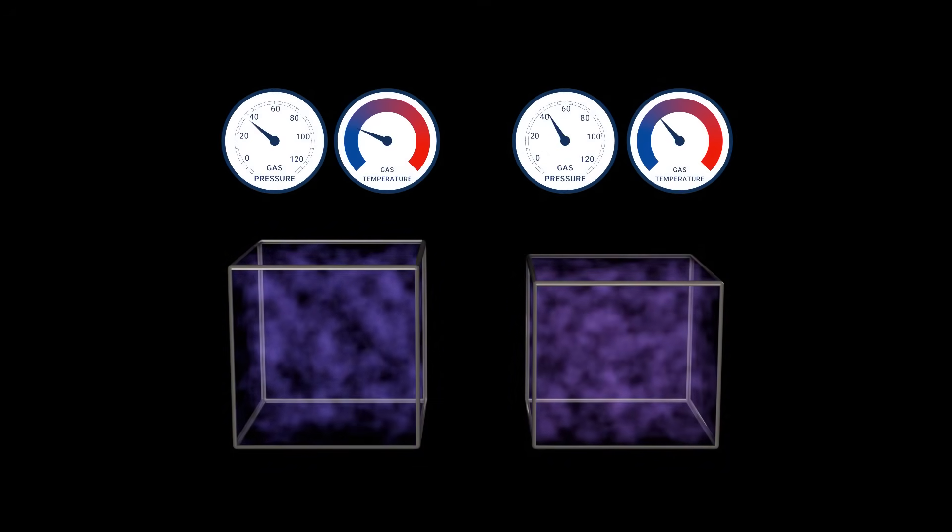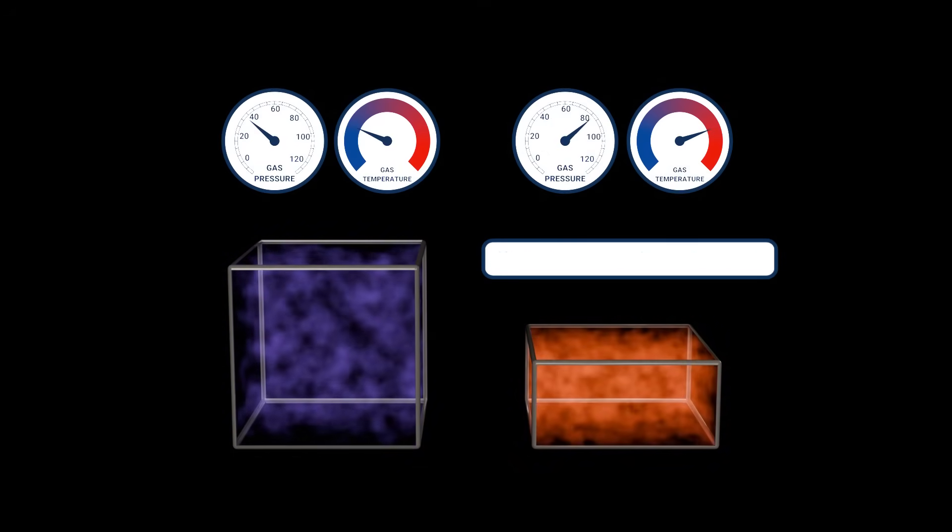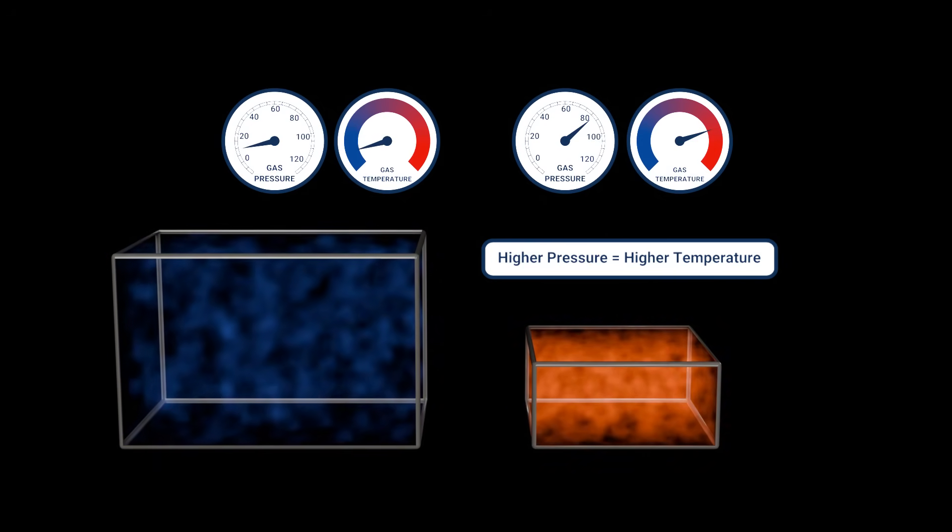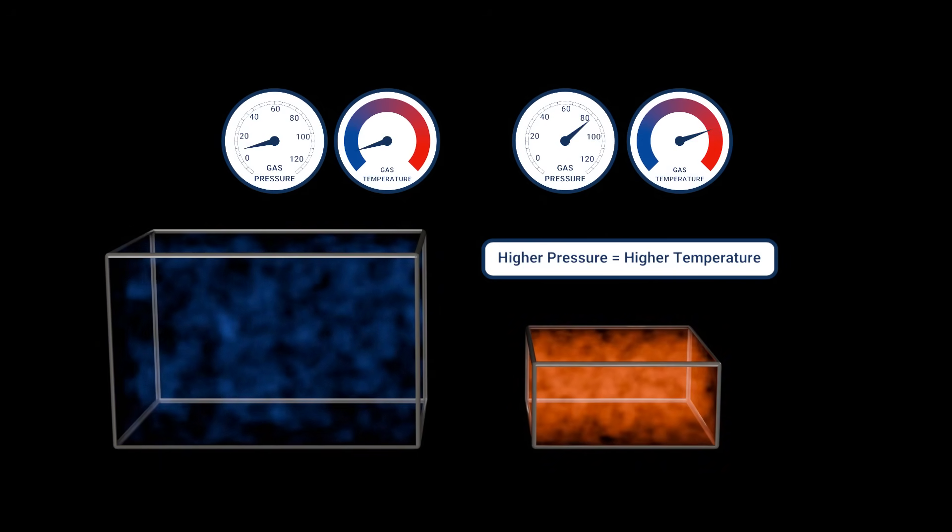We're able to control the temperature at which refrigerant boils and condenses by changing the pressure, like we discussed earlier in the video with the ideal gas law. Lower pressure equals lower temperature. Higher pressure equals higher temperature.